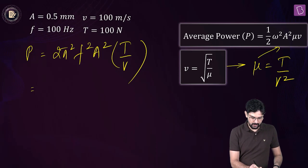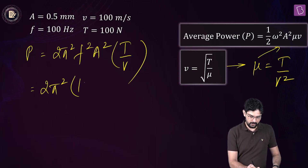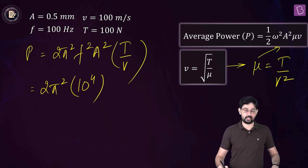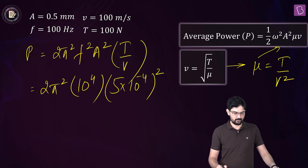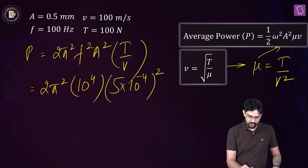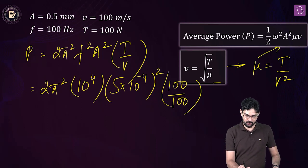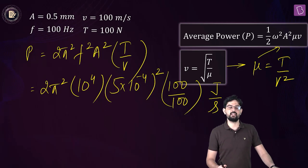So the average power transmitted is going to be 2 pi squared. f is 100, so 100 squared is 10 to the power 4. Amplitude is 0.5 mm — converting to meters, this is 5 into 10 to the power minus 4, squared. Tension is 100 and speed is also 100. The unit is going to be joule per second, since we are dealing with power.